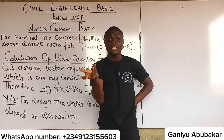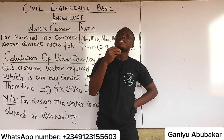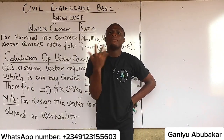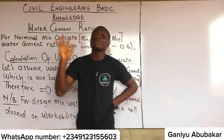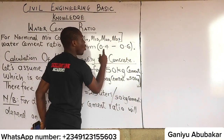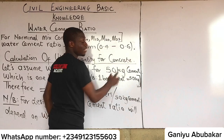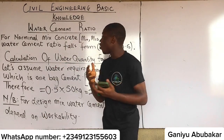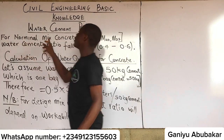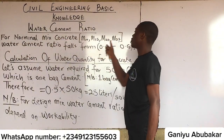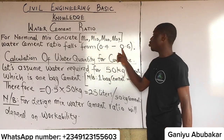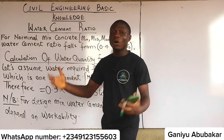Let's say you go to a site and the engineer specifies a water cement ratio for you — they might say use 0.5, or 0.4, or 0.6. Those are the valid values. The range of water cement ratio for nominal mix ratios M10, M15, and M25 falls between 0.4 and 0.6.